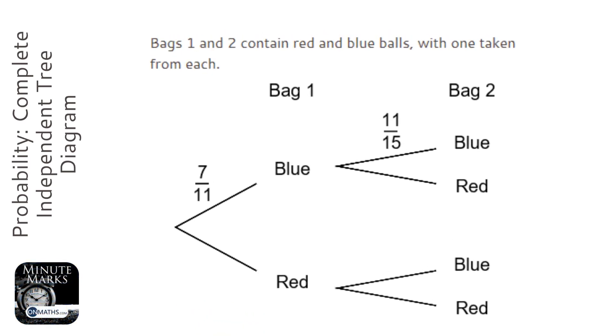We're told that there's bags one and two. The pick from bag one has no relation to the pick from bag two, and that's important because that means it's independent probability rather than conditional.